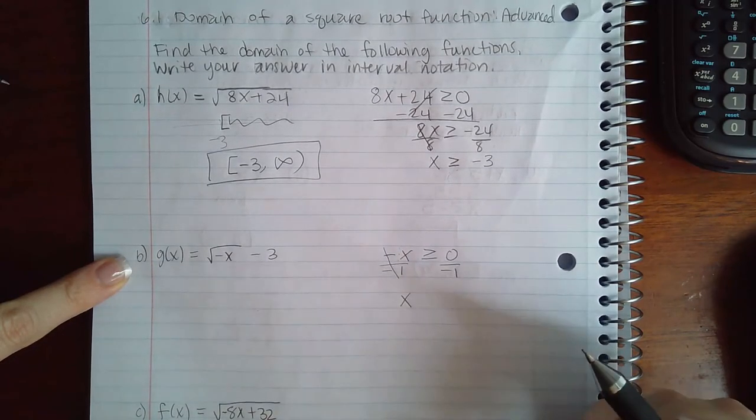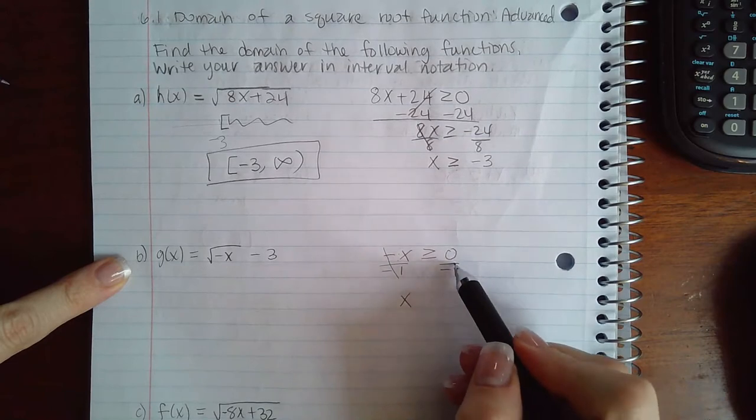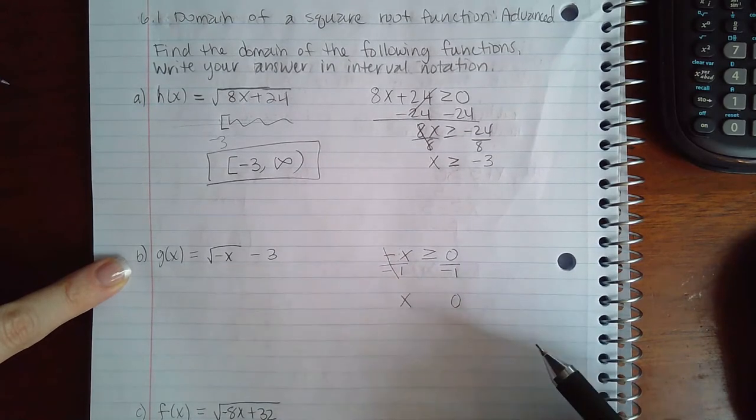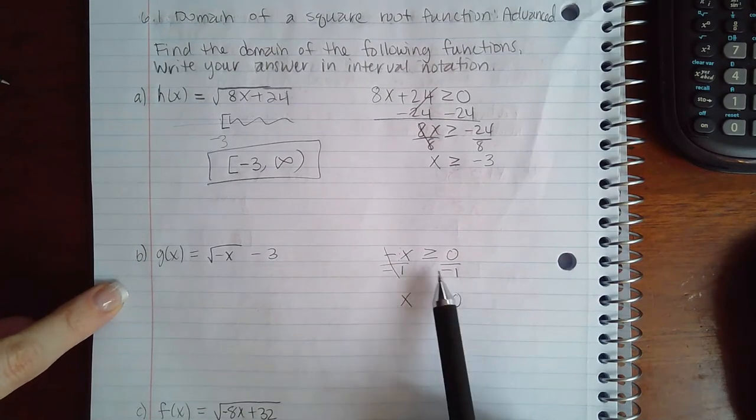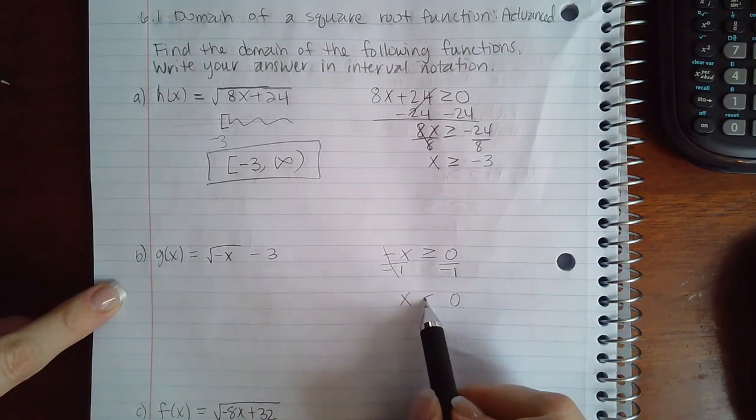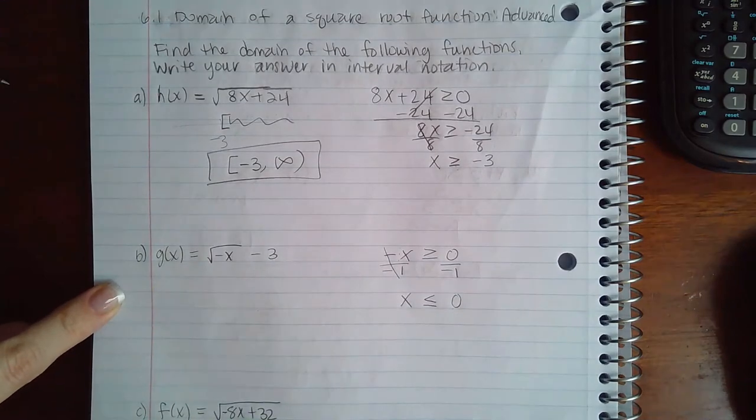That will cancel out the negative, giving me x alone, and zero divided by anything is still zero. However, because I divided by a negative on both sides, this symbol is going to now point in the other direction.